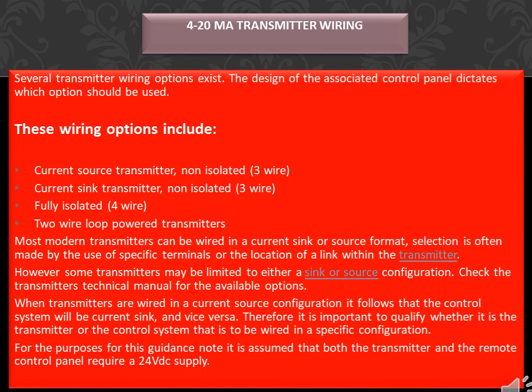Several transmitter wiring options exist. The design of the associated control panel dictates which options should be used. These wiring options include: current source transmitter non-isolated 3-wire, current sink transmitter non-isolated 3-wire, fully isolated 4-wire, and 2-wire loop-powered transmitters. Most modern transmitters can be wired in a current sink or source format, with selection often made by the use of specific terminals or the location of a link within the transmitter.